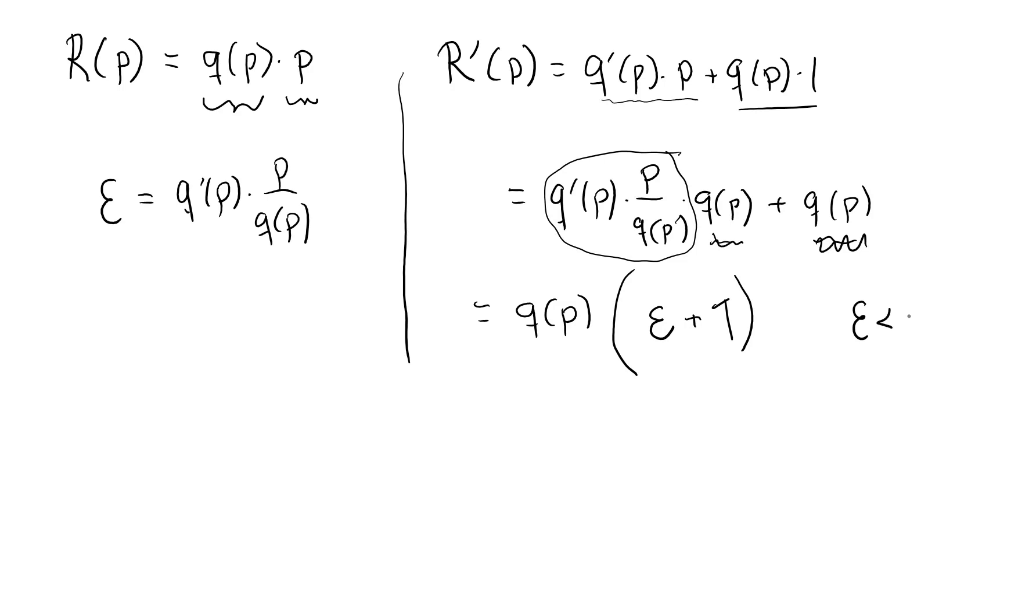Now epsilon is, well, pretty much always negative. We may even say always negative. It would only be positive for a given good which, if they exist, are extremely rare. Let's have a look at the absolute value of epsilon.